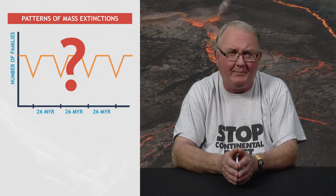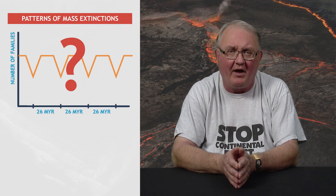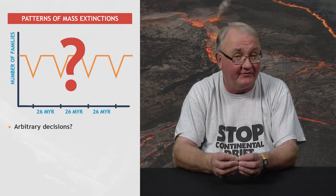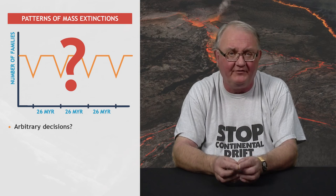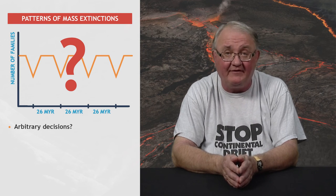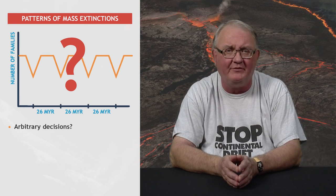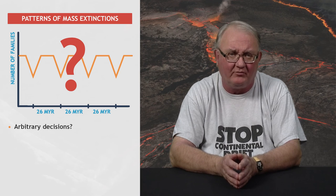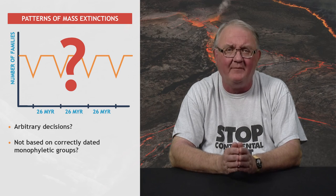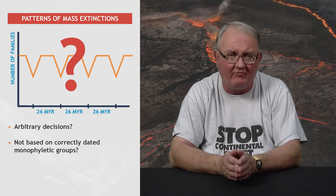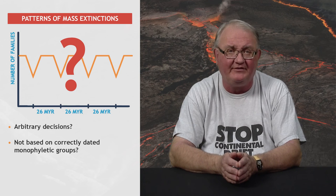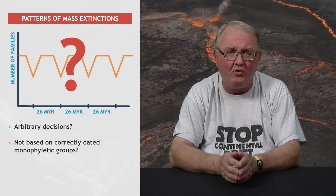Hoffman considered that the 26 million year periodicity of mass extinctions was an artifact generated by arbitrary decisions, such as the geological timescale used and how maximum extinctions are defined. Patterson and Smith, leading experts on fossil fishes and echinoderms, analyzed the quality and accuracy of this database for their areas of expertise. They found that only 25% of the families used by Raup and Sepkoski were correctly dated monophyletic groups. When the 75% of data belonging to groups that were not monophyletic and or incorrectly dated was removed, some of the apparent peaks of extinction disappeared, suggesting that the 26 million year periodicity may be an artifact based on noise in the dataset.